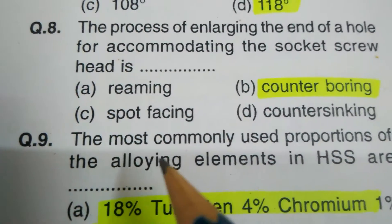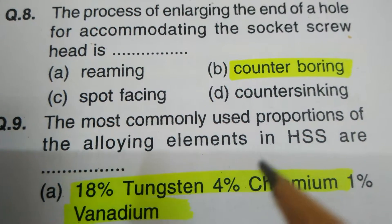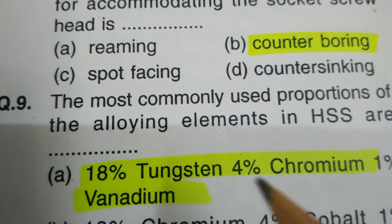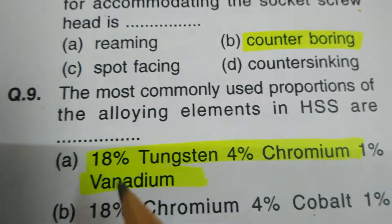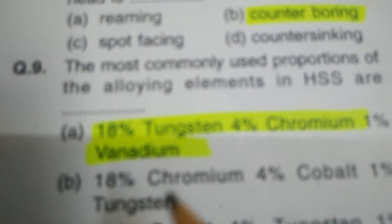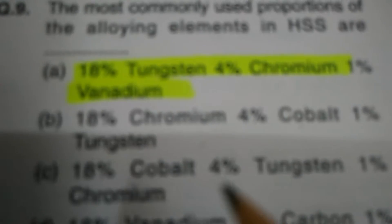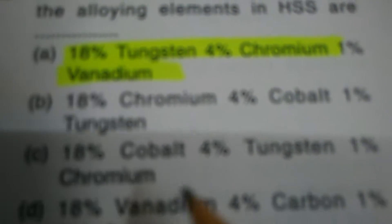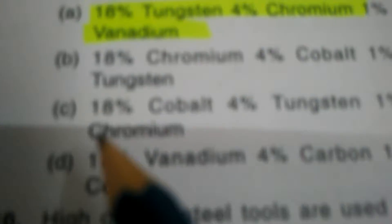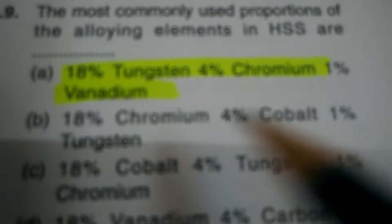Question number nine. The most commonly used proportion of alloying elements in high speed steel are: options include 18% tungsten, 4% chromium, 1% vanadium; 18% chromium, 4% cobalt, 1% tungsten; 18% cobalt, 4% tungsten, 1% chromium; 18% vanadium, 4% carbon, 1% cobalt. The correct answer is: 18% tungsten, 4% chromium, and 1% vanadium.